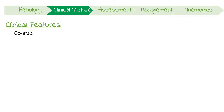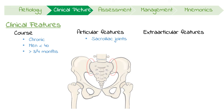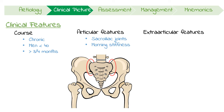Ankylosing spondylitis follows a chronic relapsing and remitting course that typically affects men under 40 years old, with symptoms lasting more than three or four months. It's important to consider both articular and extra-articular features. It usually affects the sacroiliac joints first, then progresses to other areas of the spine, causing morning stiffness and night pain, which is improved by exercise.